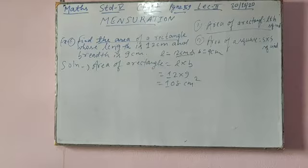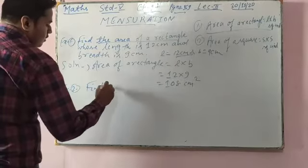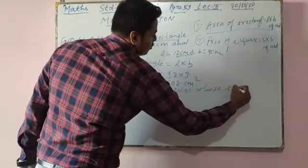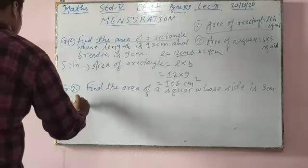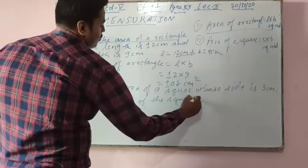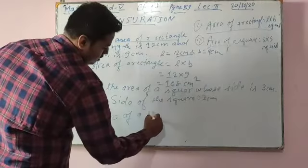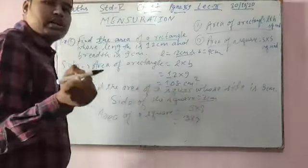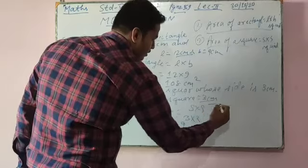Now we will go to example number 2: find the area of a square whose side is 3 cm. The side is given as 3 cm, and you have to find the area of the square. Area of a square formula is side into side. In a square, all sides are equal, so 3 into 3 gives 9 cm square.